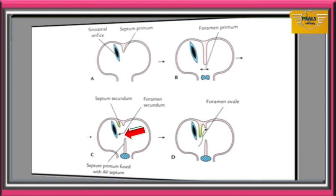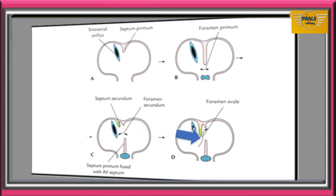The foramen thus formed is called foramen secundum or ostium secundum. A second crescent-shaped septum will also arise from the roof of the primitive atrial chamber, immediately to the right of septum primum. It is called septum secundum. The septum secundum will grow downwards towards septum intermedium, overlapping the foramen secundum. The right and left atria now communicate through an oblique, valvular passage between the upper margin of septum primum and the lower margin of septum secundum. This new passage is called the foramen ovale.